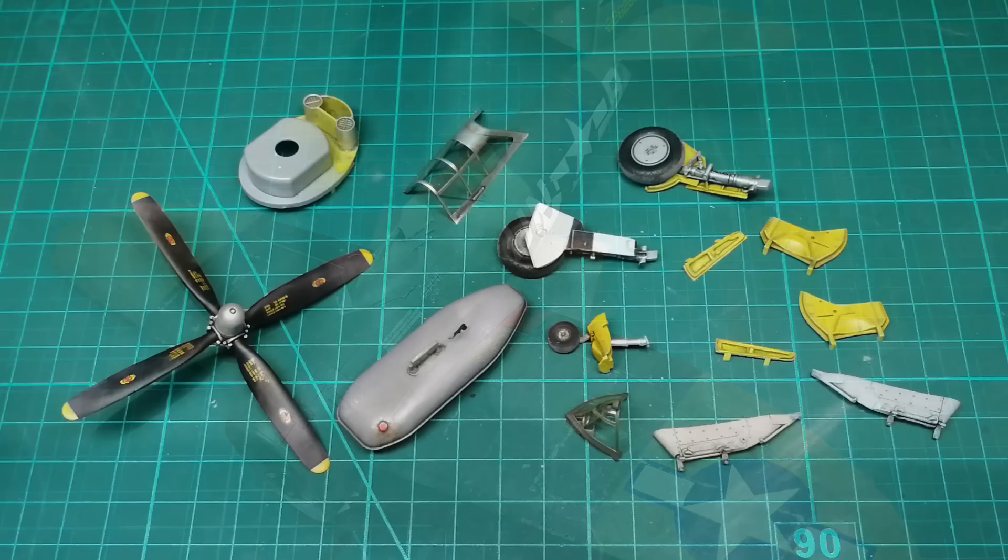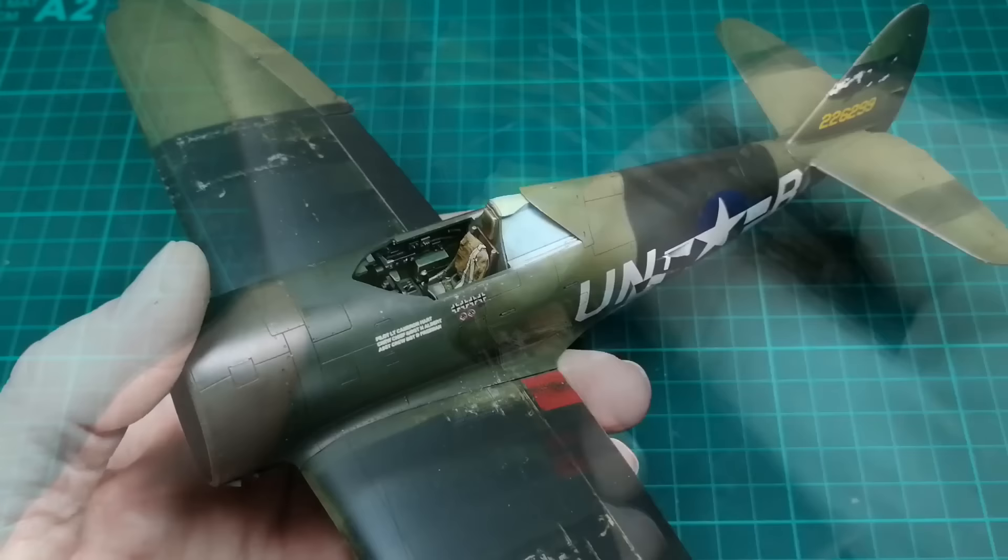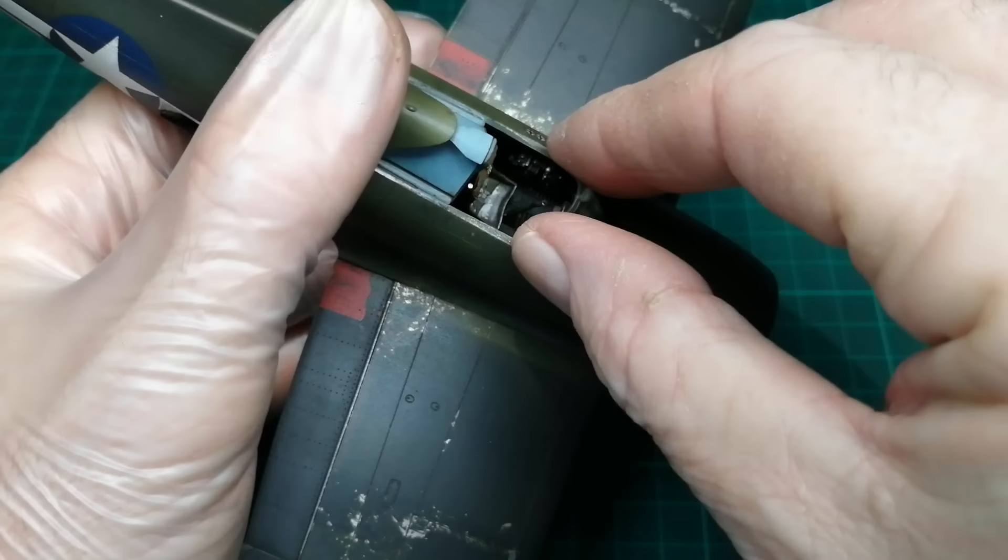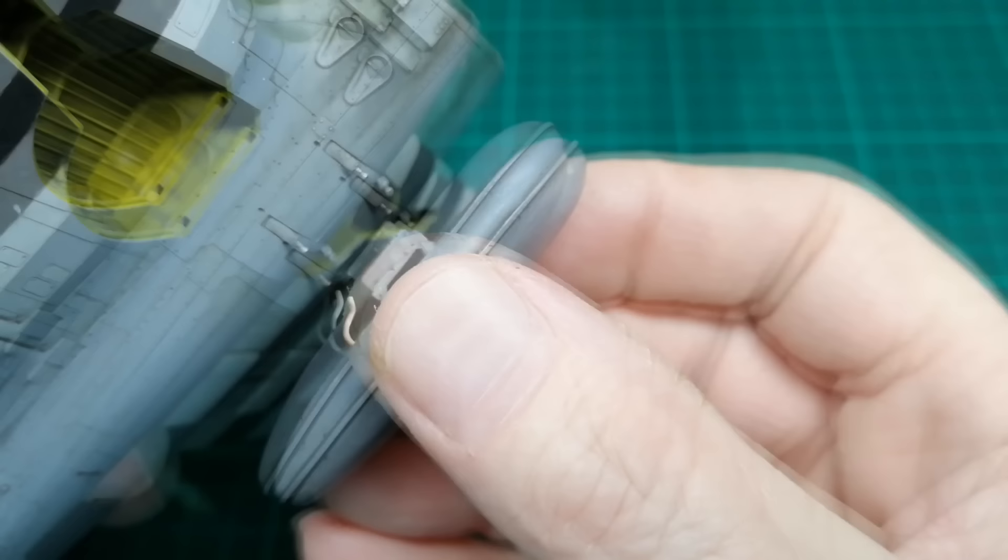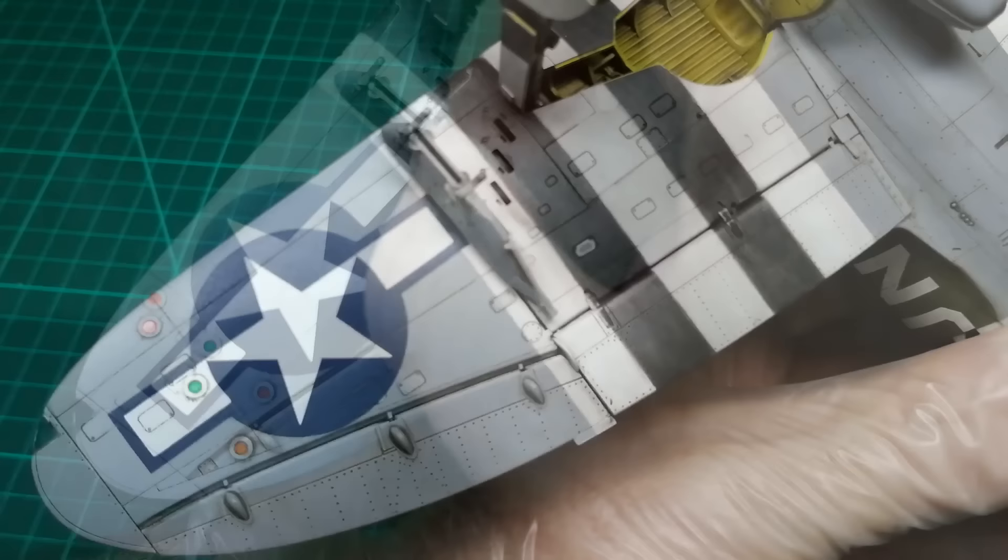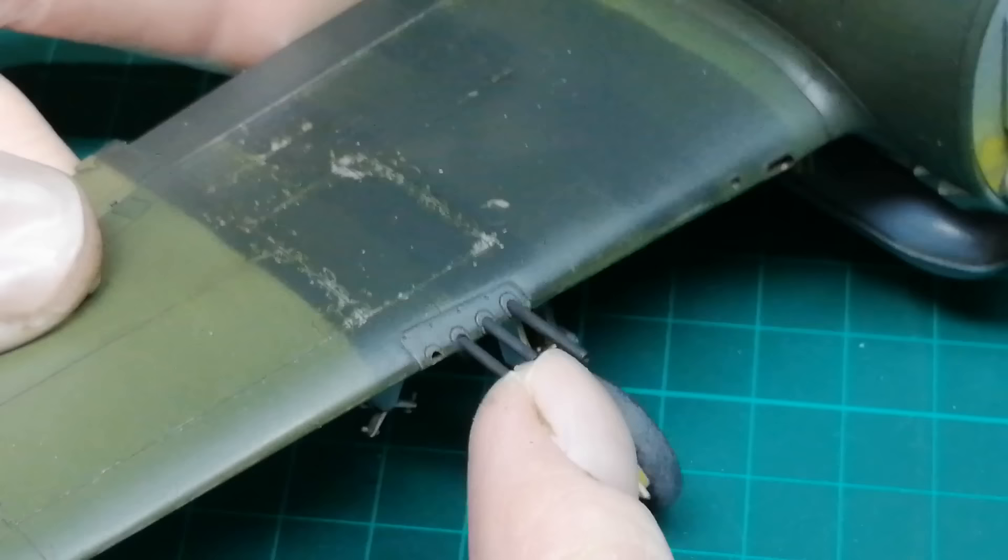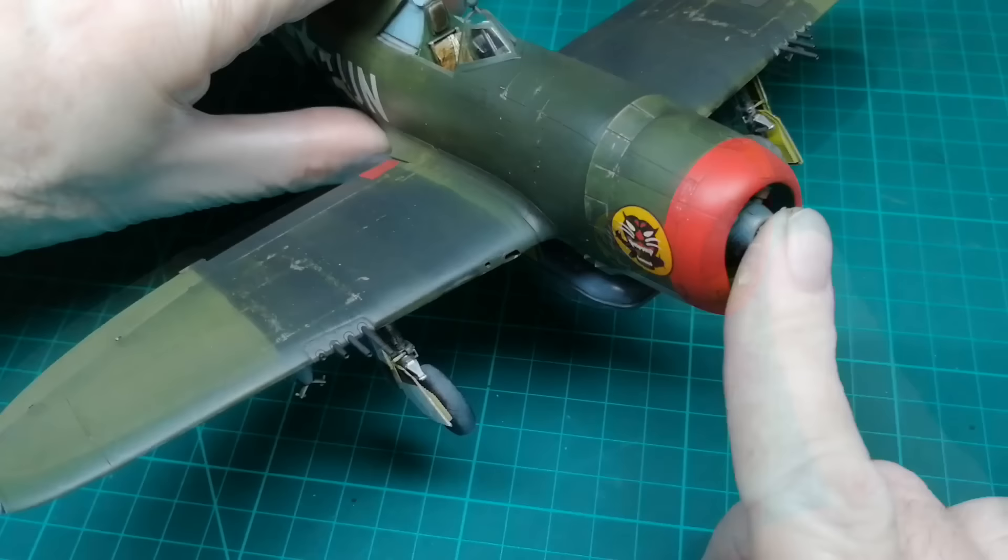So I just need to add all these pieces and get this kit finished off. So I've just got the pitot tube and the aerial on top to add.